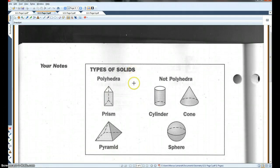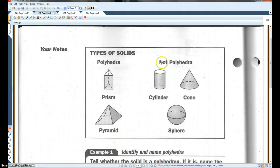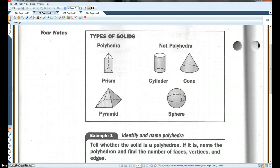Up at the top here, we have different types of solids. These ones are polyhedra. These ones are not polyhedra. The way you know whether or not a solid is a polyhedra is if it has faces, edges, and vertices, like these. Over here, we have curved sides. So these ones are not polyhedra.